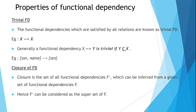Now, continuing with properties of functional dependency. The first property is trivial functional dependency. A functional dependency is trivial if it is satisfied by all relations — it will be true for all relations. For example, a dependency from X to X is trivial. More generally, a dependency X→Y is trivial if Y is either a subset of X or the same as X. For instance, from {SSN, name} to SSN — whenever SSN and name repeat, SSN repeats. Here Y is a subset of X, so this holds for all relations and is a trivial functional dependency.